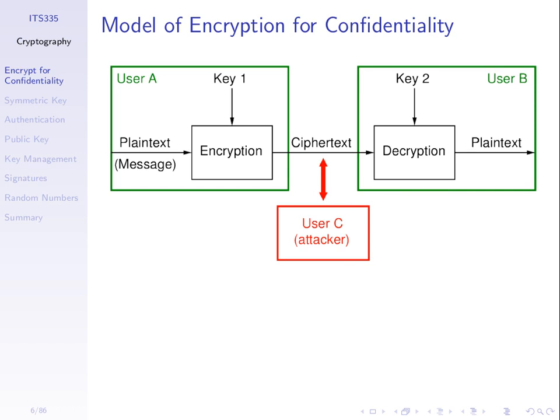The encryption and decryption algorithms used at A and B go together — they're related, sometimes even the same algorithm. They must have the property that if we encrypt a plain text message to get cipher text, and then decrypt that cipher text using the correct key, we must get the original plain text back. The algorithms take a key as input. In this picture the encryption uses key one and decryption uses key two. They may be the same value or different values depending on the scheme.